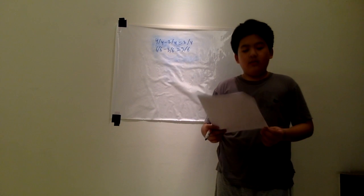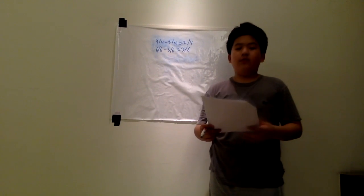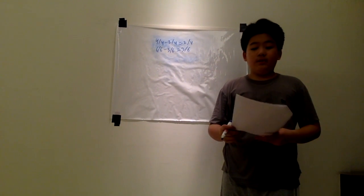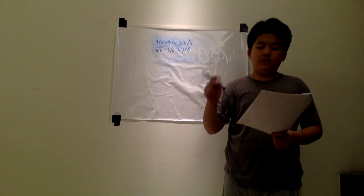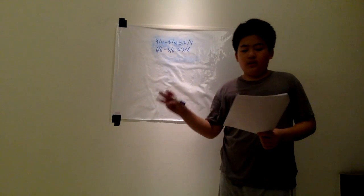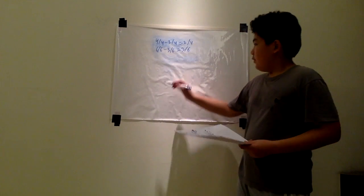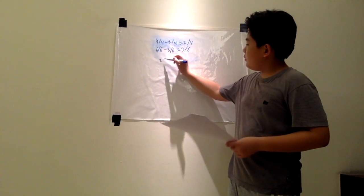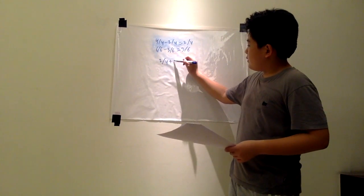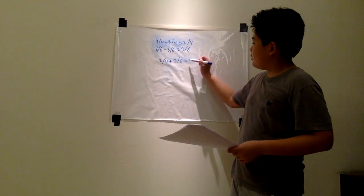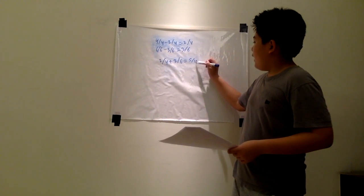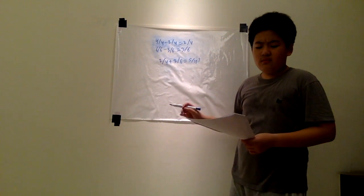But how do you add them together? One of the pizzas was cut to four pieces and the other one was cut to six pieces. There were two leftovers and three leftovers. So is the equation like this? Two out of four plus three out of six equals five out of ten? No.